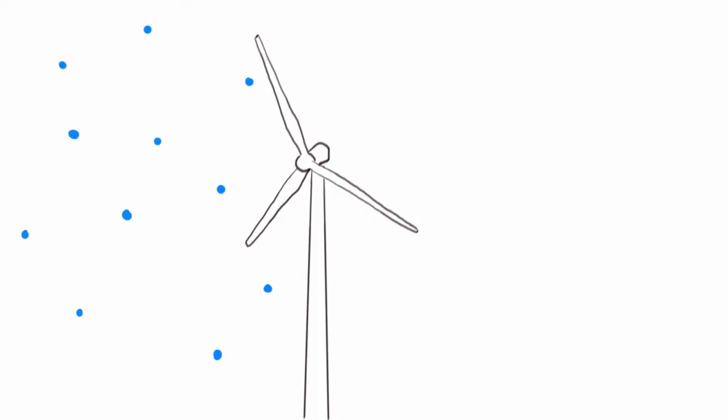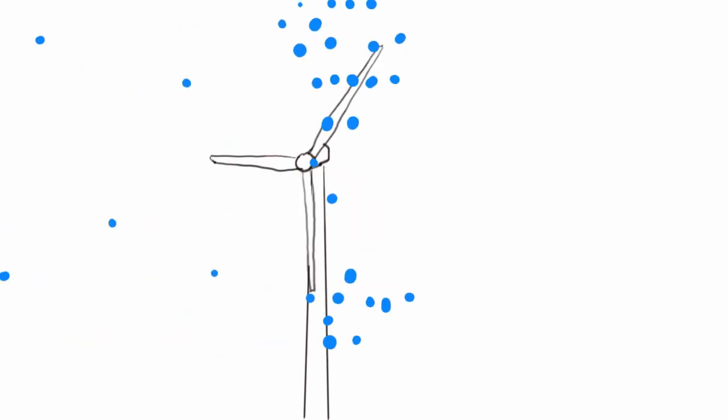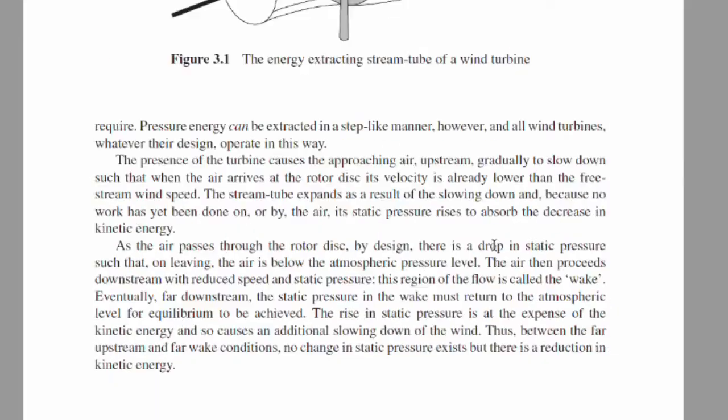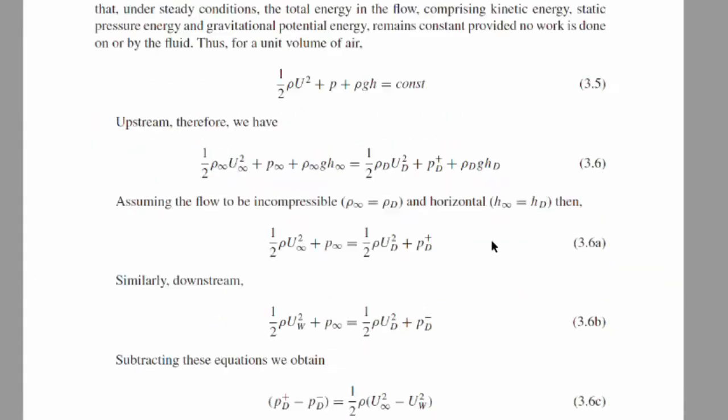It's not physically possible to extract all the energy from the wind, as that would mean that the wind velocity was reduced to zero downstream of the turbine. Without any velocity, the air particles would just pile up behind the turbine, which is obviously not possible. So there is a maximum amount of energy that can be extracted, and this maximum was calculated by a guy called Betz. The Betz limit shows that the maximum amount of energy that can be extracted from the stream tube is about 59%, so that is the maximum efficiency that any wind turbine can have.